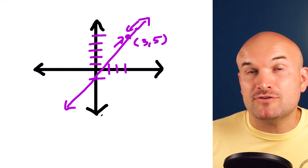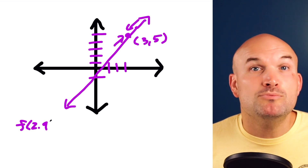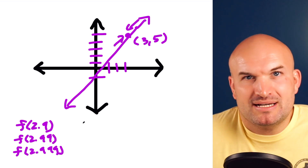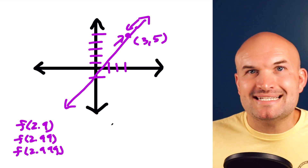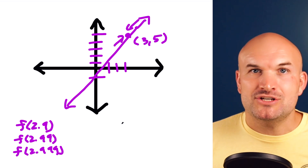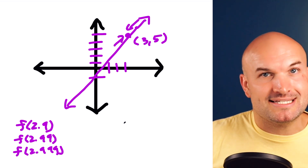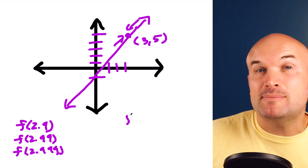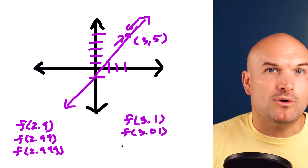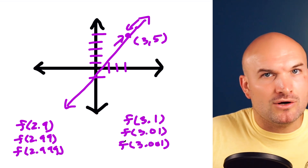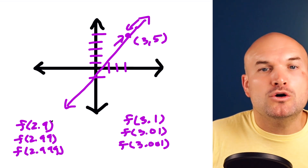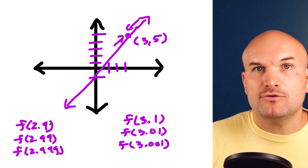Rather than evaluating for three, I want to evaluate for 2.9, 2.99, and 2.999 — the more nines I add, the closer my input values are getting to three. Then from the right hand side: 3.1, then 3.01, then 3.001. The more zeros I add right after three before adding a one, the closer it's getting to three.